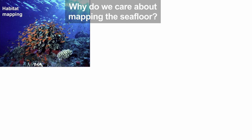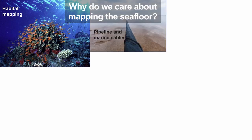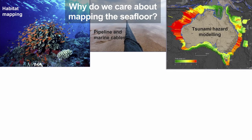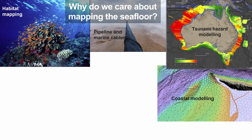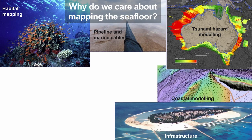We need to know about seafloor structures and whether it's hard or soft to better design the laying of pipelines, marine cables, and other infrastructure going from offshore to land. We also use seafloor maps to help inform tsunami hazard modeling — because the shape of the sea floor affects ocean currents and how they come up to the coast, which is particularly important for how tsunamis might impact coastal communities. And we use it for coastal modeling to figure out how currents might be changing over time and how this might affect coastlines where we often have cities and buildings.